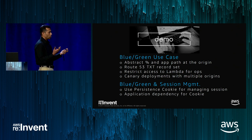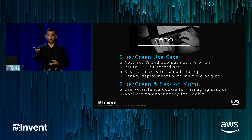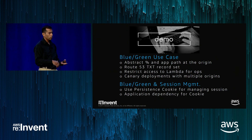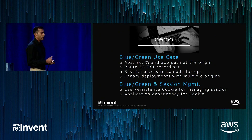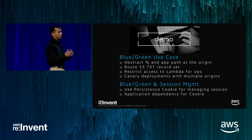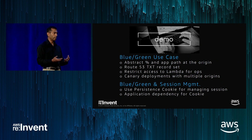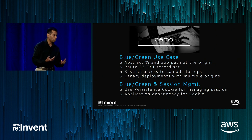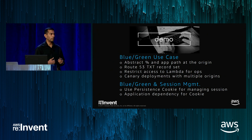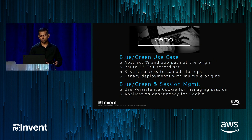In CloudFront, we have two origins: blue and green. Lambda at the Edge makes the routing decision by querying Route 53, which determines — based on weighted routing — which origin receives the request. This also supports canary deployments with multiple origins: keep 5% of traffic permanently going to one origin, release new deployments there, and if there are no errors, expand deployment to the rest. The main use case is deploying a new stack, sending some traffic to it, gradually moving all traffic there, then destroying the old stack.